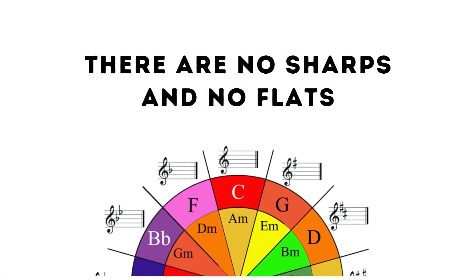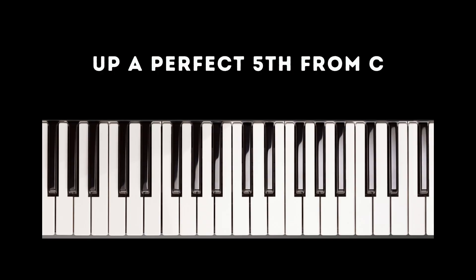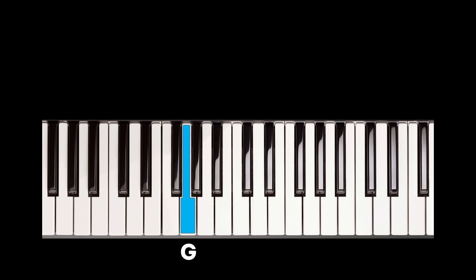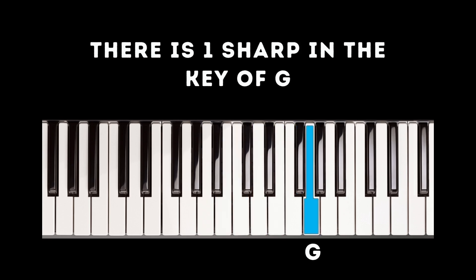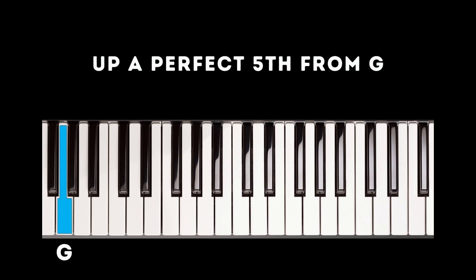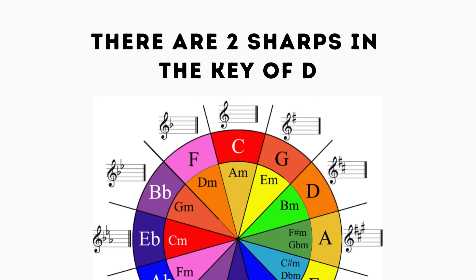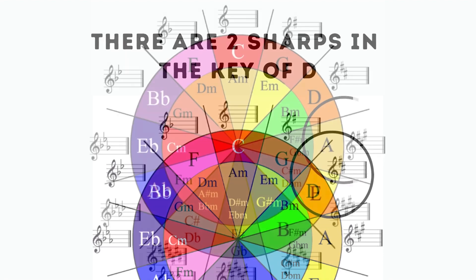So if we begin in the key of C, there are no sharps and no flats. If we go up a perfect fifth from C, we land on G. Using the same pattern for our major scale, we will find that there is one sharp in the key of G. If we go up a perfect fifth from G, we land on D. Using the same pattern for our major scale, we will find that there are two sharps in the key of D.